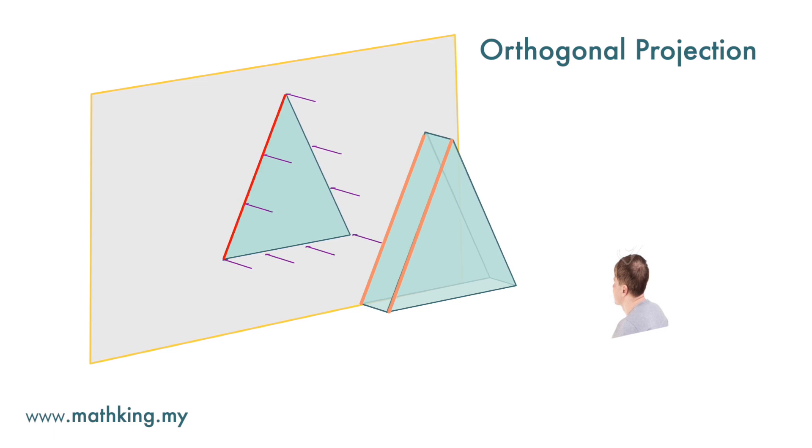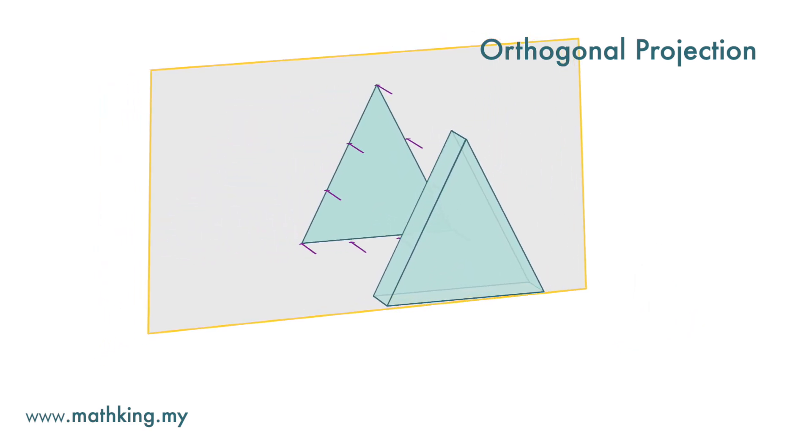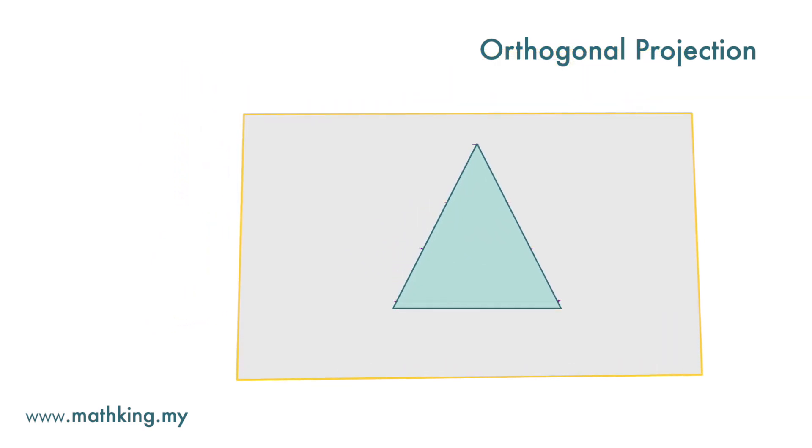This is because if you view right from this direction, normal to the plane, we only see one edge.